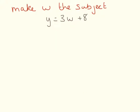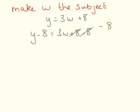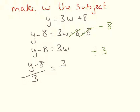Here we need to make w the subject. So the first thing we need to do is take away 8: y minus 8 equals 3w plus 8 minus 8. Plus 8 and minus 8 cancel each other out, so y minus 8 equals 3w. Then we divide by 3, giving us y minus 8 divided by 3 equals 3w divided by 3. Because we have 3 on the top and the bottom they cancel, so our answer is y minus 8 divided by 3 equals w.